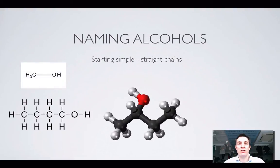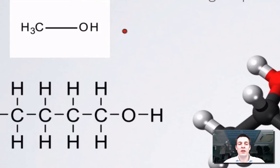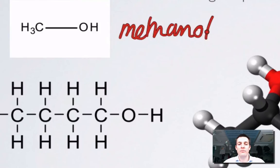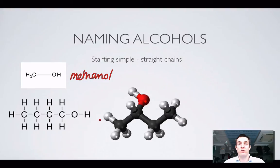Naming alcohols is quite simple if you know how to name alkanes, because you use exactly the same prefixes. If we look at this alcohol with one carbon, it starts like the alkane with one carbon—that's methane—but instead of being methane, it ends in OH because it's an alcohol, so methanol.